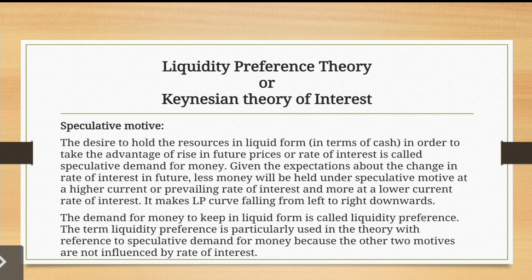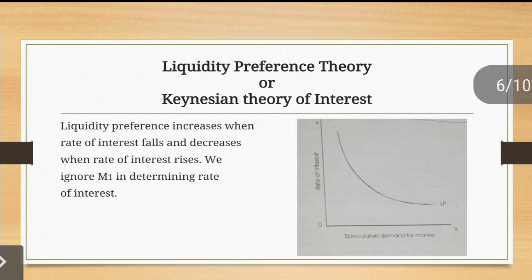The term 'liquidity preference' is particularly used in this theory with reference to speculative demand for money, because the other two motives — transaction and precautionary (active balance) — are not influenced by the rate of interest. Active balance does not respond to rate of interest changes, so it is ignored here, and demand for money refers only to speculative demand for money.